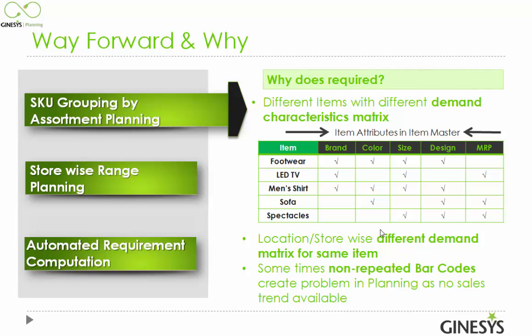Another reason why SKU grouping is required is the existence of non-repeated barcodes. Sometimes in retail — in value retail or other segments — the barcodes are not repeated. The characteristics of the items may be almost the same but the barcodes are different. In that case, we need grouping so that we can use earlier barcode sales data for replenishing the new barcode. For that, assortment planning — the grouping of SKUs — is required.